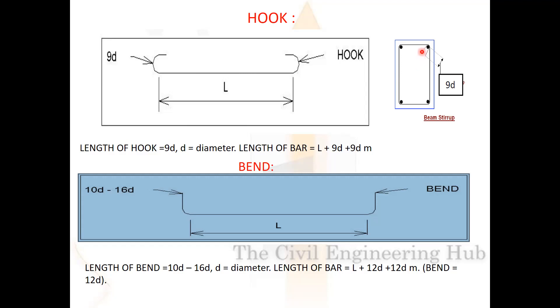The length of the hook is 9 times the diameter on each side, so total hook length = 9d + 9d = 18d.